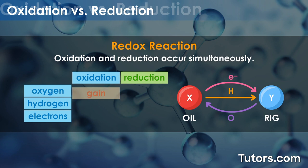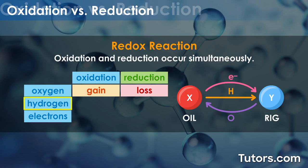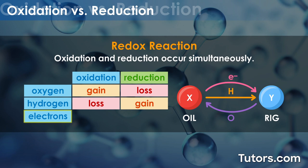This is what happens to oxygen, hydrogen, and electrons during oxidation vs. reduction. Oxygen transfer: oxidation is a gain of oxygen; reduction is a loss of oxygen. Hydrogen transfer: oxidation is a loss of hydrogen; reduction is a gain of hydrogen. Electron transfer: oxidation is a loss of electrons; reduction is a gain of electrons.